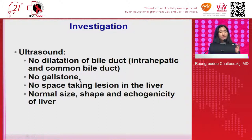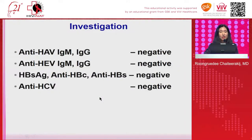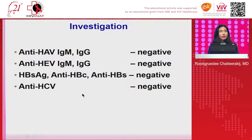In the gallbladder there was no gallstone, and the liver looks very good — normal size, shape, and echogenicity. Next, we did the serology for viral hepatitis A, E, B, and C. They were all negative.